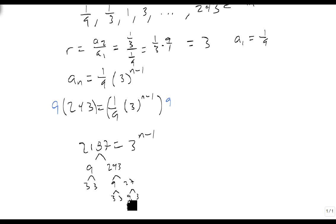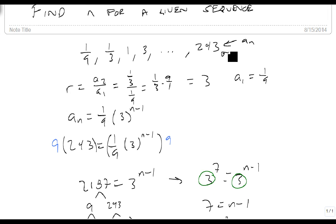So this is 1, 2, 3, 4, 5, 6, 7. So what this turns into is 3 to the 7th equals 3 to the n minus 1. Since the bases are the same, we simply get 7 equals n minus 1, so n is 8. That means there are 8 terms here.